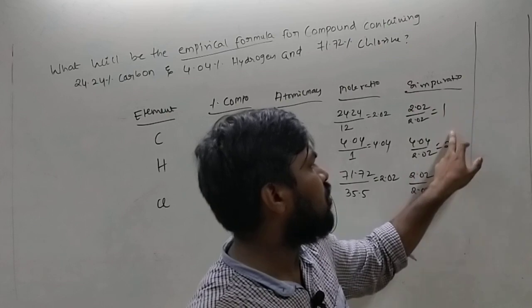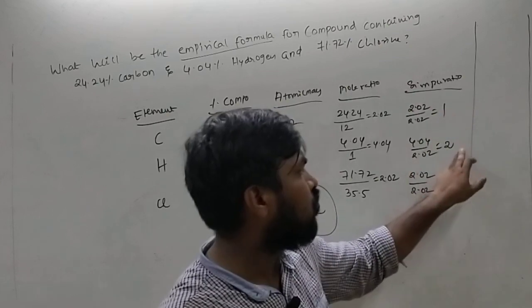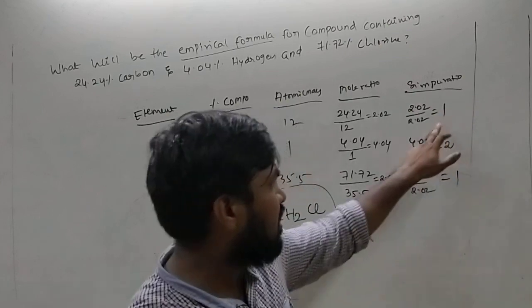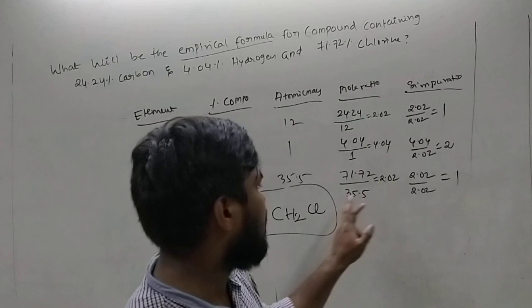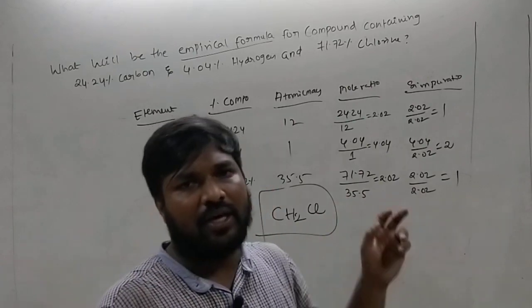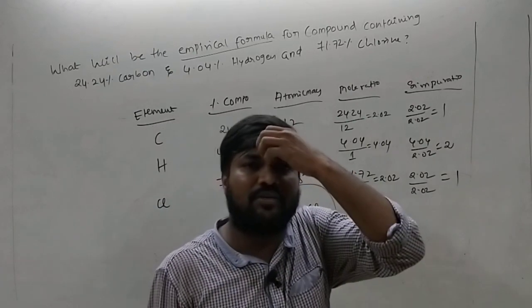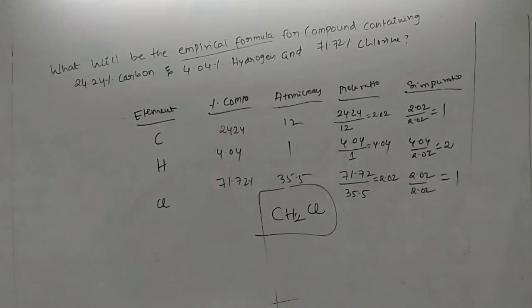The simple ratio comes out to 1:2:1, meaning carbon is 1, hydrogen is 2, and chlorine is 1. The empirical formula is CH₂Cl. Thank you guys for watching my video. Bye-bye.